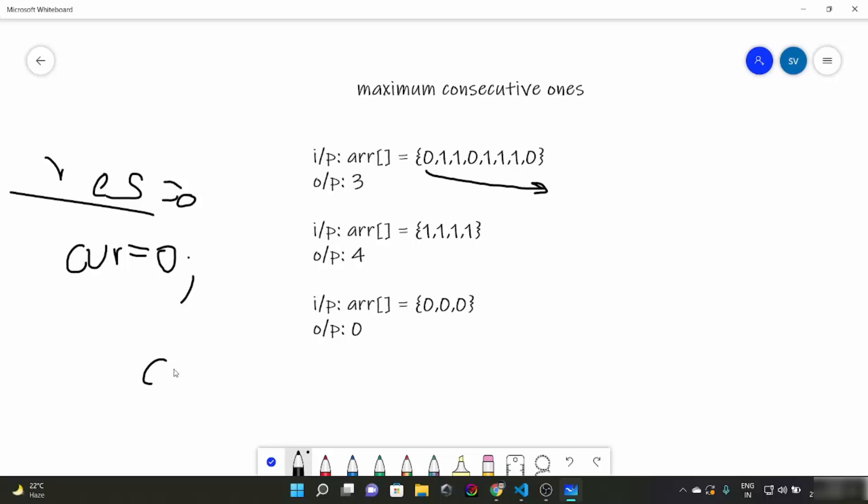And if we find a number like 1, we will increase our curr. What we are going to do is we are going to have res as max of res and curr. Like every time we find a 1 we are going to do this thing.